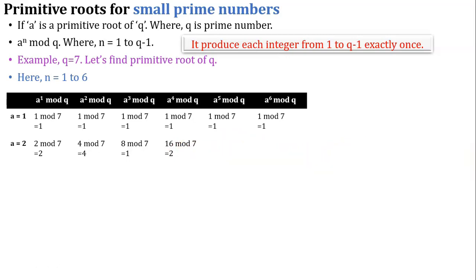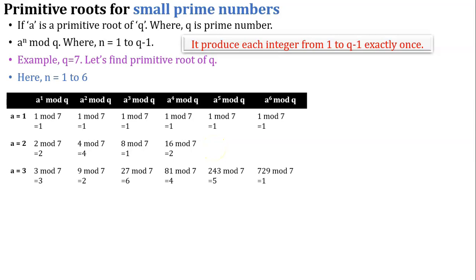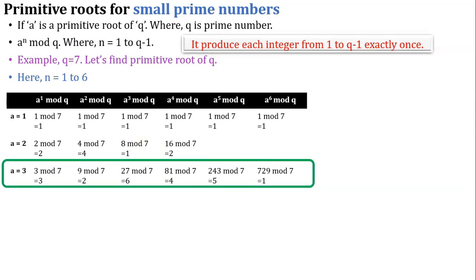For a equals 3: first equation gives 3, second gives 2, third gives 6, fourth gives 4, fifth gives 5, and sixth gives 1. Our condition is satisfied because we get all numbers from 1 to q-1 exactly once. So we can say 3 is a primitive root of 7.